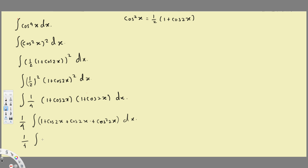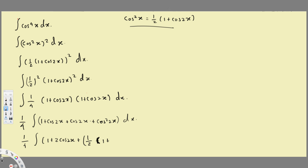For the cos squared 2x term, I apply the same identity again. Since we have cos 2x, the angle doubles, so it becomes cos 4x. So cos squared 2x equals one half plus one half cos 4x. Substituting this in, we get one over 4 times the integral of (1 + 2 cos 2x + one half + one half cos 4x) dx.